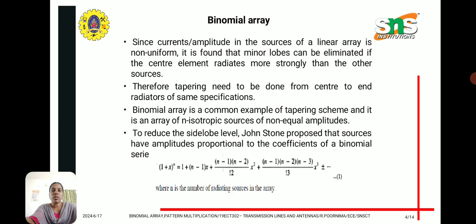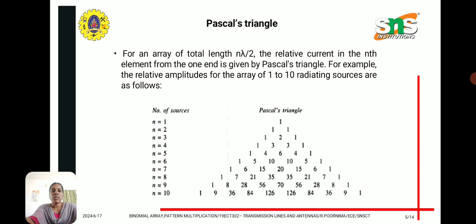To reduce the side lobe level, Johnstone proposed that sources have amplitudes proportional to the coefficients of the binomial series. The binomial series is used, and Pascal's triangle is used for giving the source amplitude. For an array of total length n times lambda by 2, the radiating current in the nth element from one end is given by Pascal's triangle. For example, the relative amplitudes of an array of 1 to 10 radiating sources are given as follows.